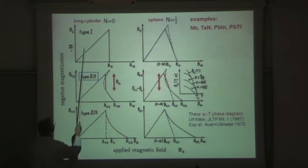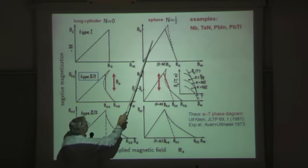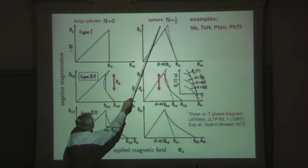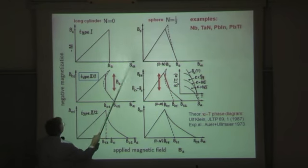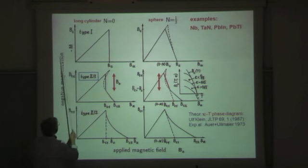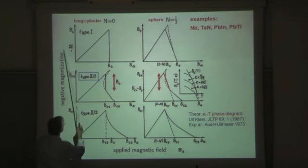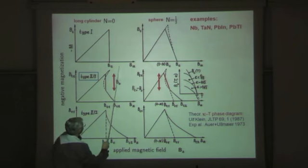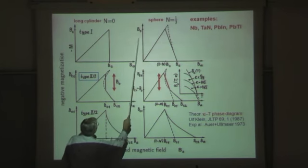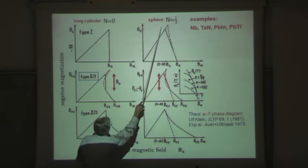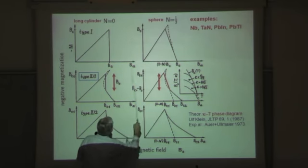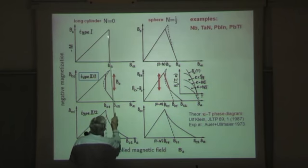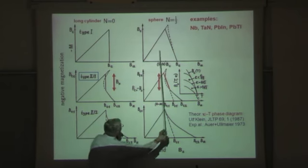The overview is like this. When you have a long cylinder with no demagnetizing effects, and here you have a sphere with demagnetizing factor one-third, then a type-2 superconductor has this magnetization curve. The magnetization is external field minus internal field in this situation. For a finite demagnetizing factor, the same curve appears but it's sheared. This point here had a vertical tangent, and now this is...